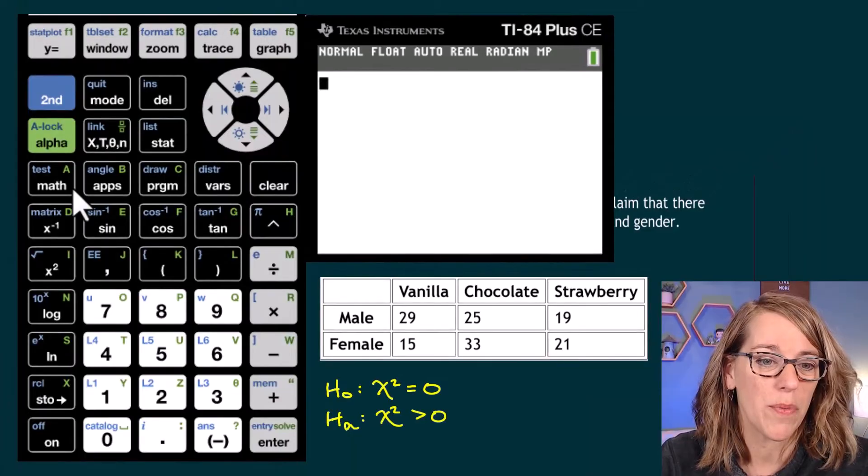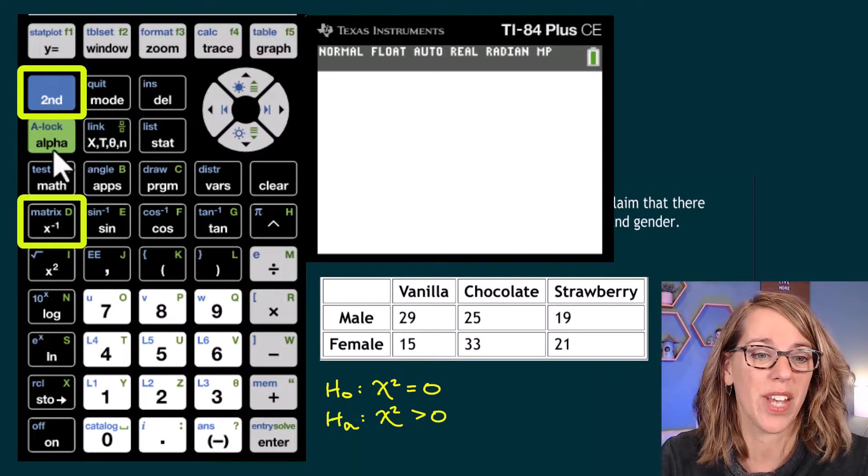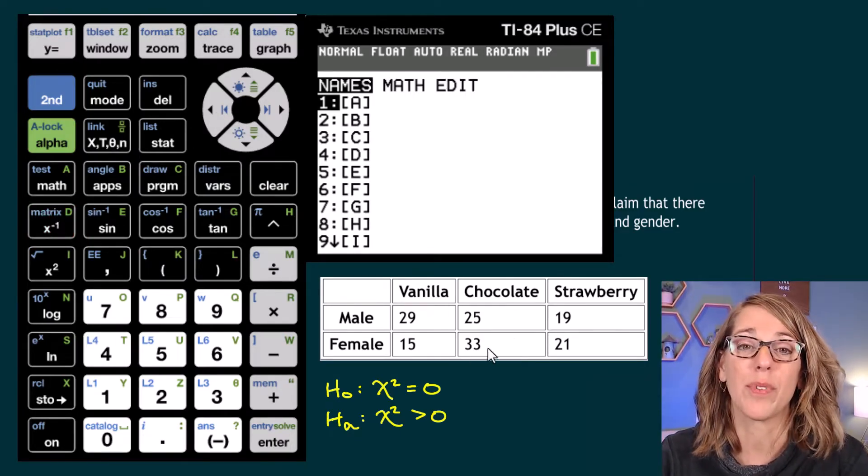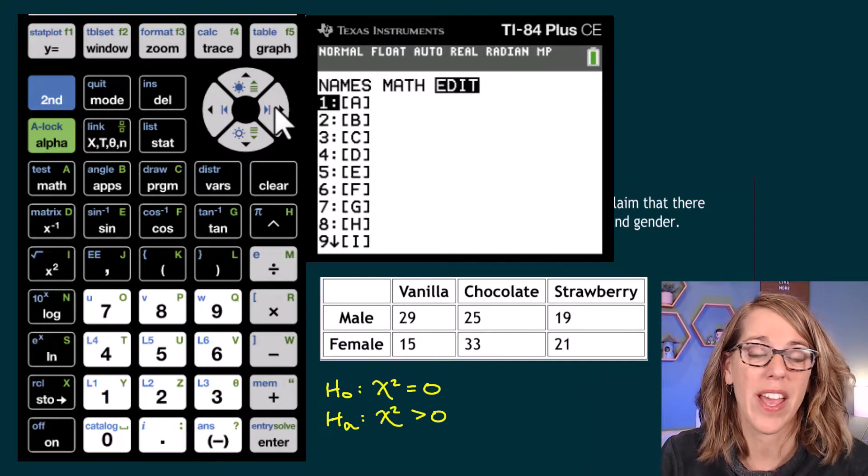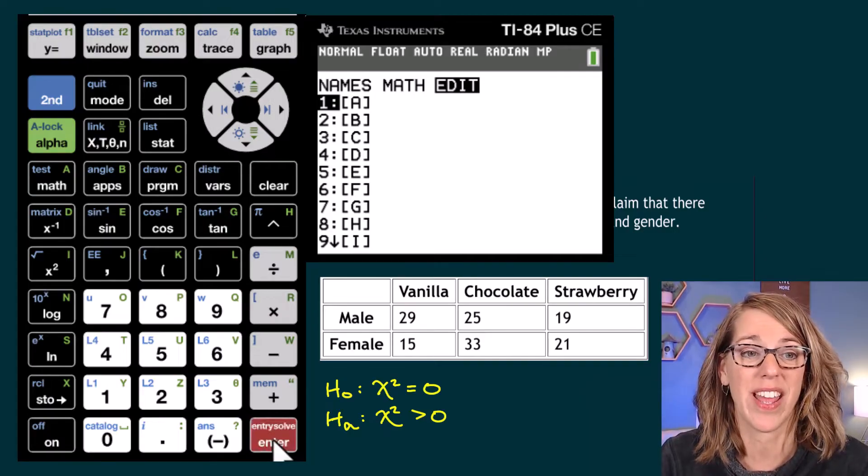So I'm going to go over to my matrix menu, which is right here underneath math. So I'm going to go second and then matrix. I want to edit a matrix so I can put these observed values in that I've got in the table. So I arrow over to edit, and then I'm going to hit enter to select matrix A. So I'll hit enter next.